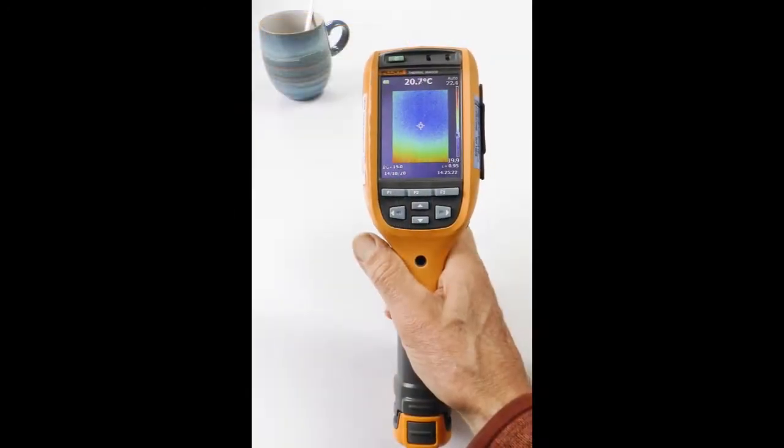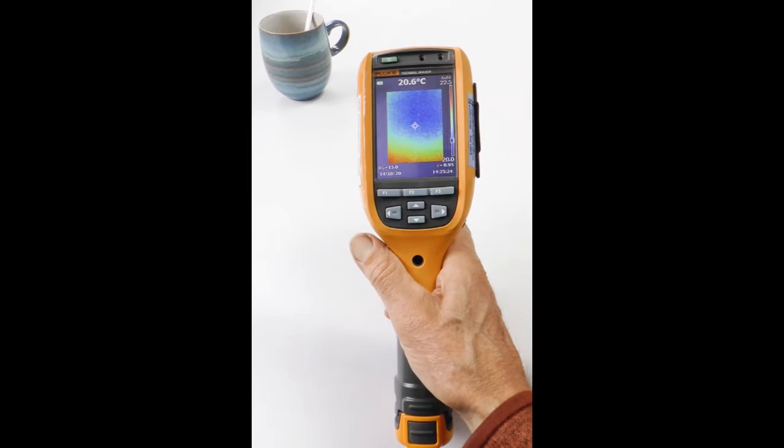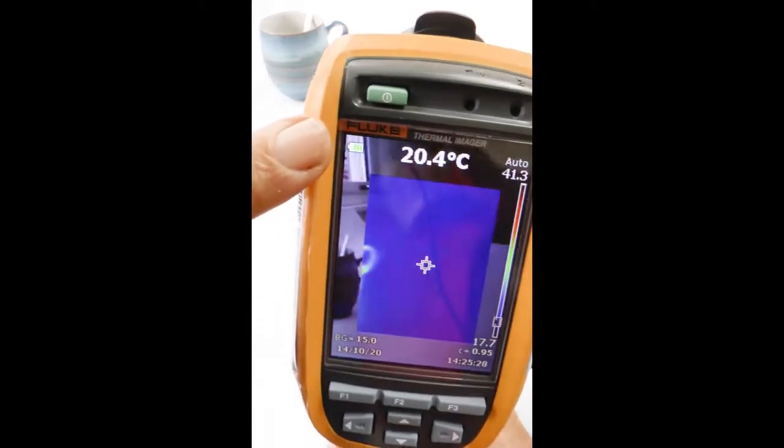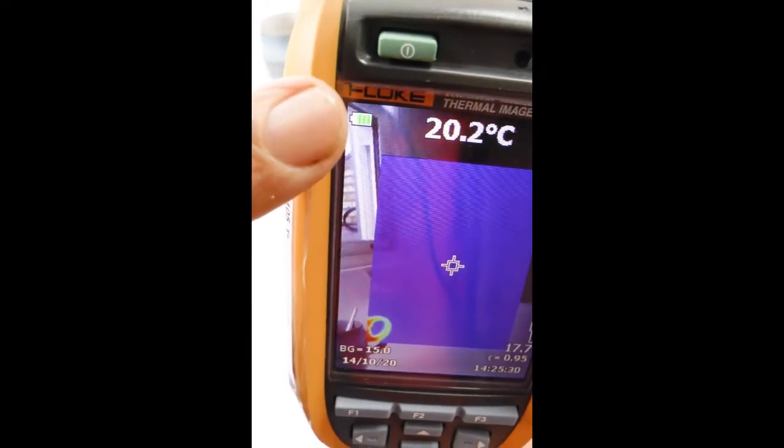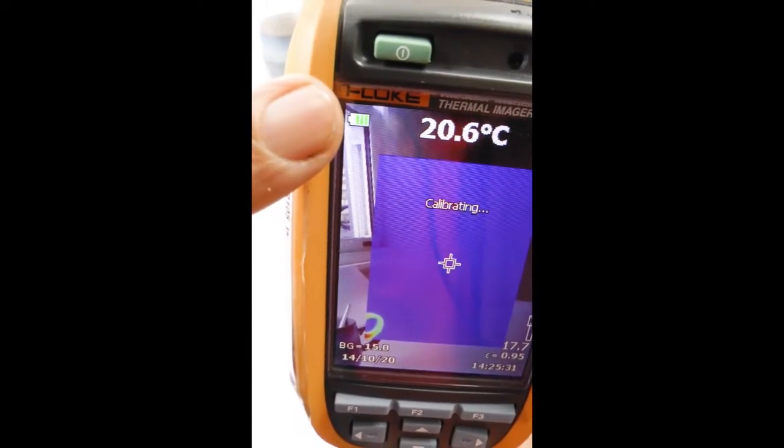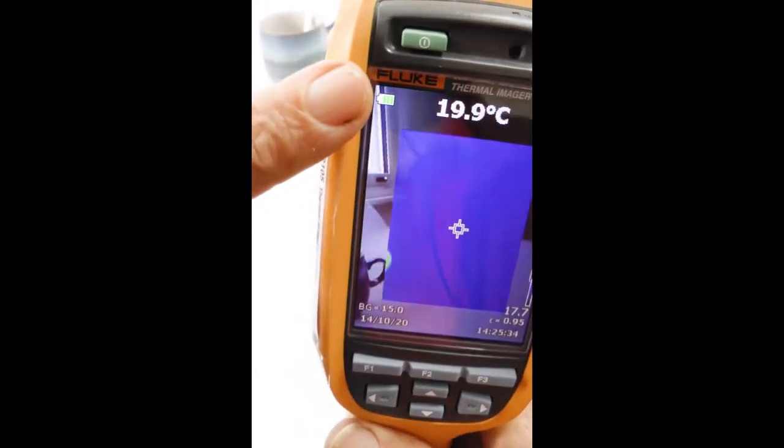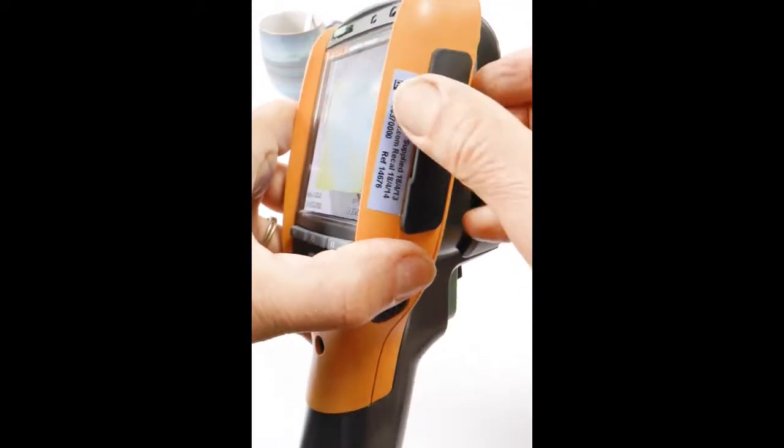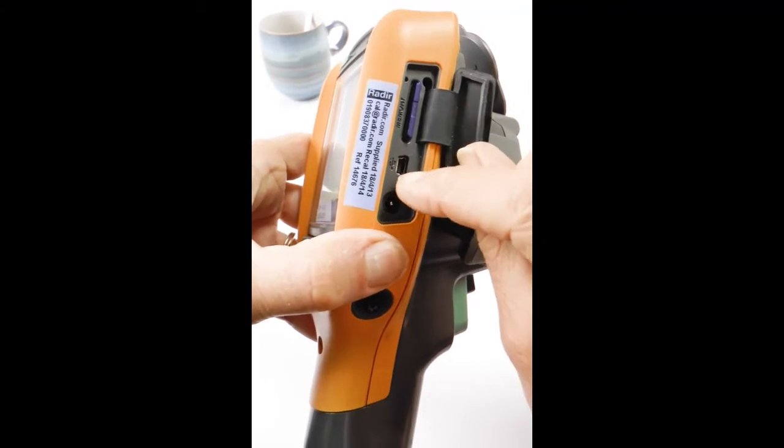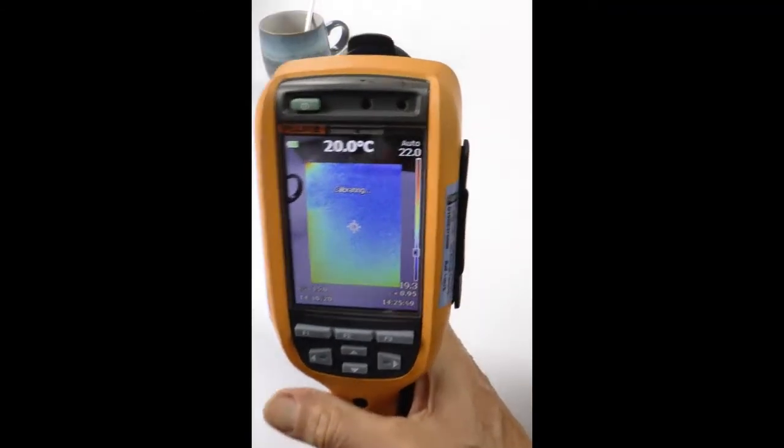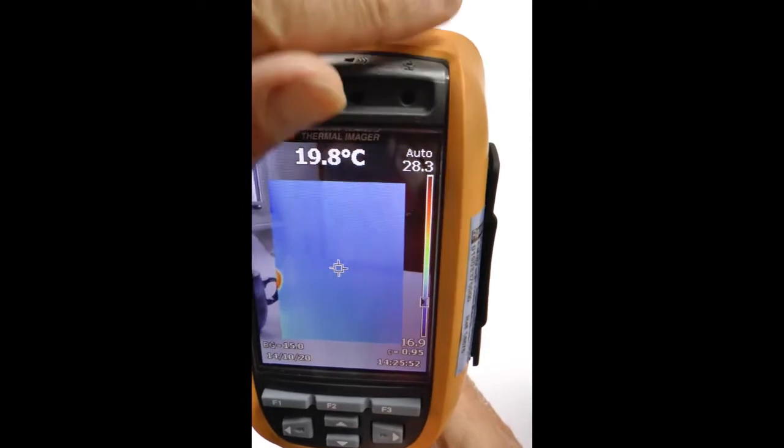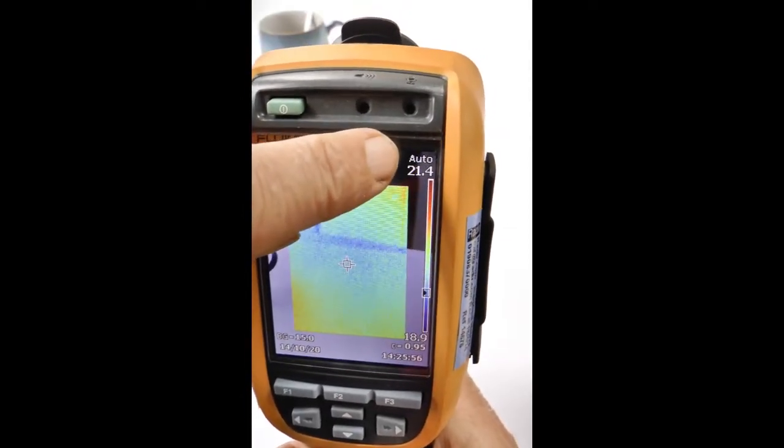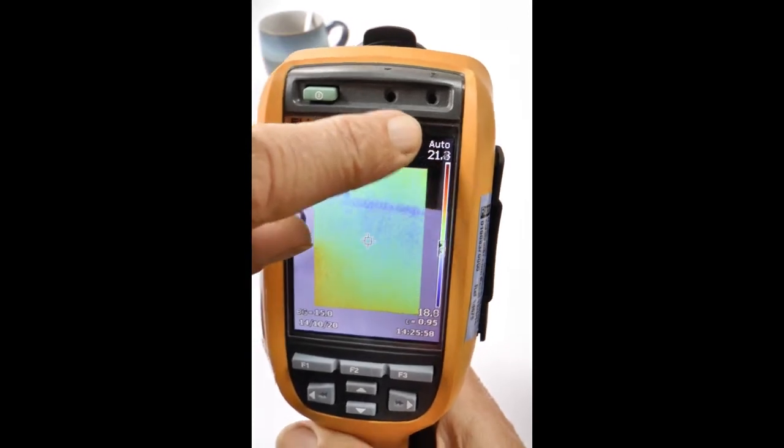Before you take pictures let's do these checks. First check the battery indicator in this top corner and as you can see this has three bars out of four so that's in pretty good state. If you need to plug in the battery charger it goes in this socket. Then in the top right of the screen it's showing the camera is in auto so leave it in that state.